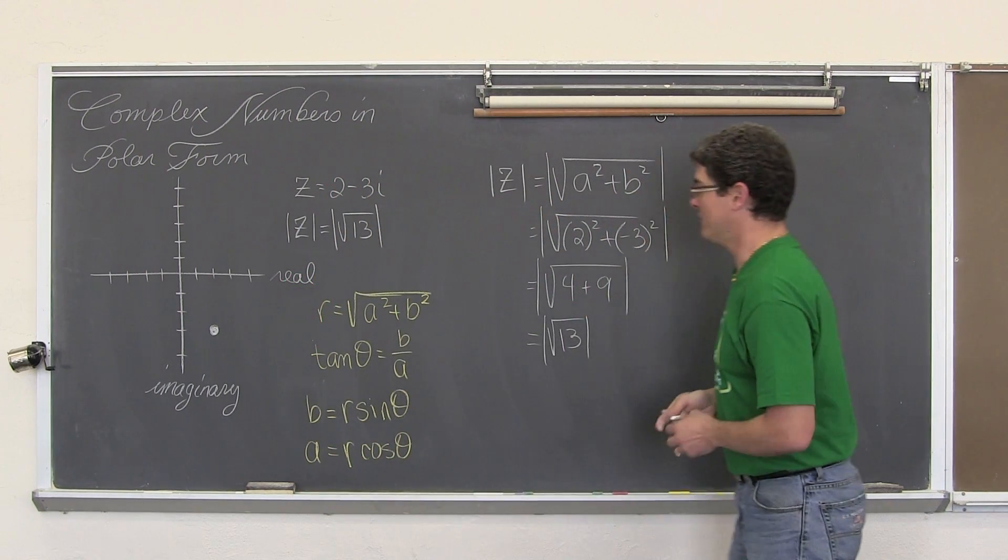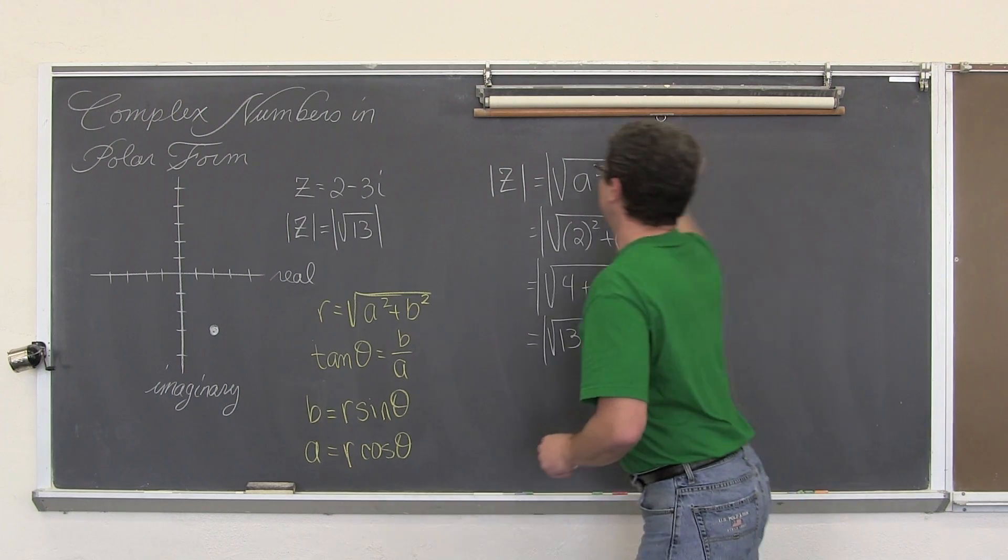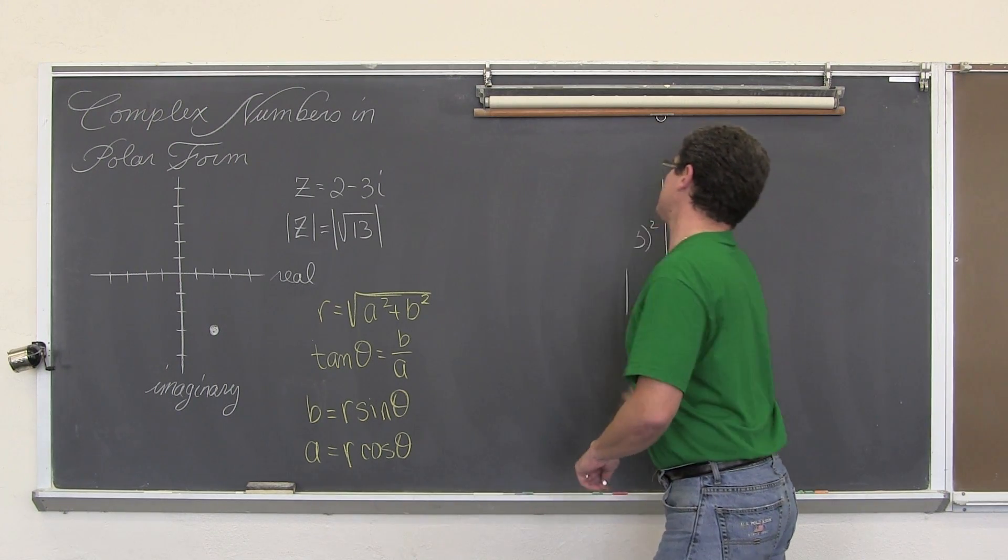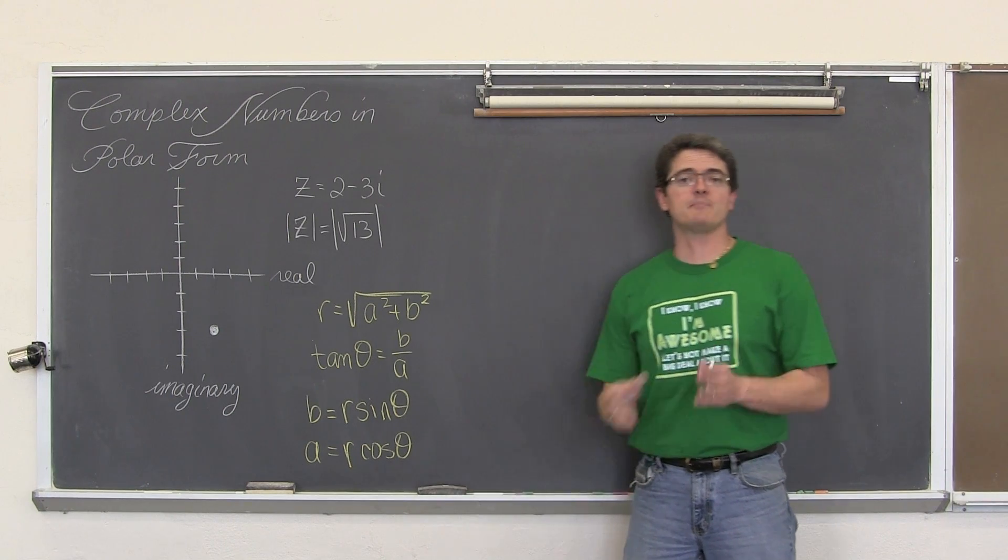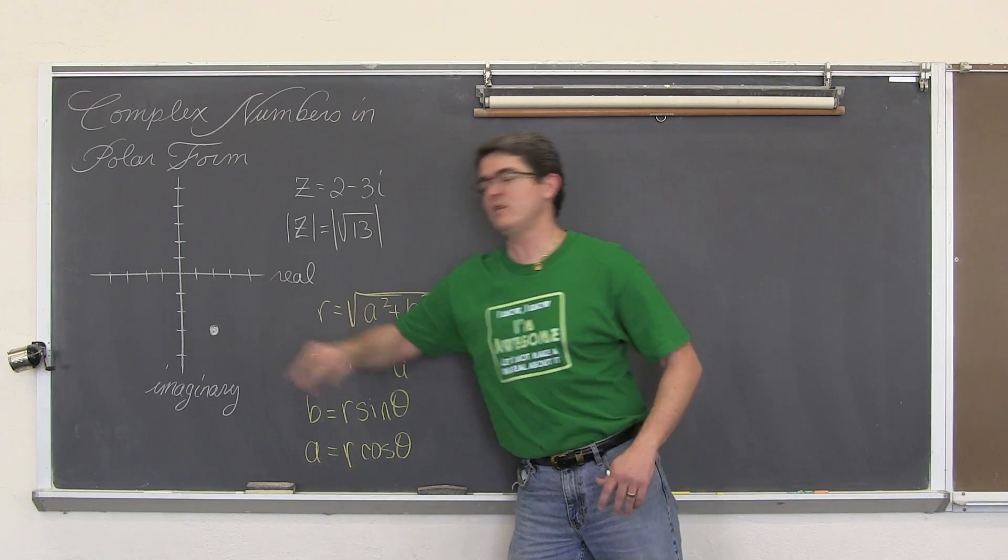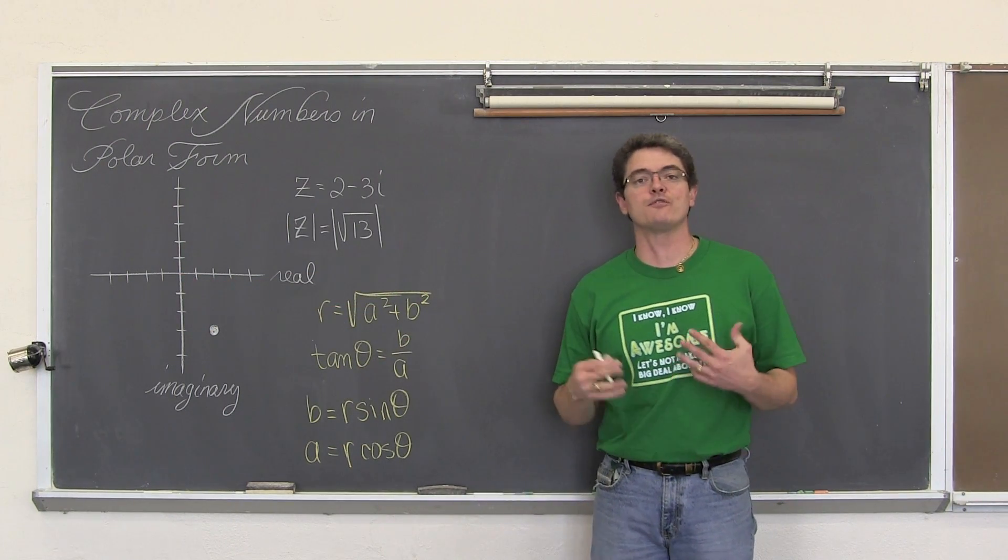Absolute value is the distance that the point is away from the origin. And as a distance, we want to make sure that comes out to be a positive answer. So the absolute value of z is going to be the square root of 13. And we have been doing that kind of calculation now for a very long time.